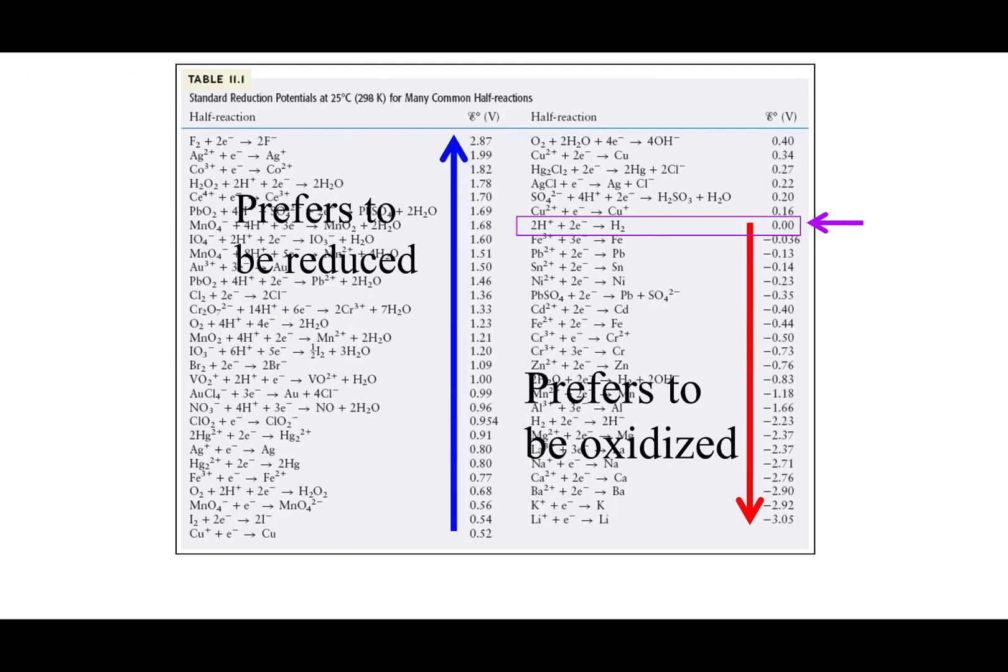So based on that treatment that we showed on the last slides, if you look at the standard reduction potentials, you will see that things with a negative standard reduction potential have a tendency to be oxidized. Because you want to reverse the reaction with the lower potential when you're combining two things. What you'll also notice is things that have a positive potential tend to be reduced. And that's because when you combine two reactions, these are unlikely to be reversed.